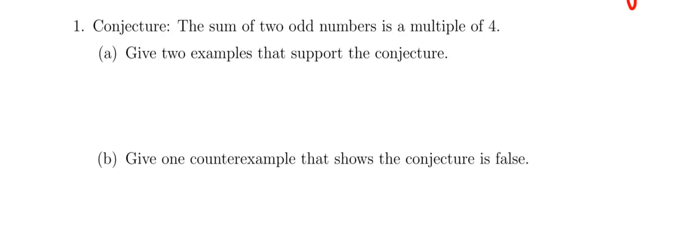All right, so in this question it starts off with the conjecture: the sum of two odd numbers is a multiple of four. Now we're going to give two examples to support that.